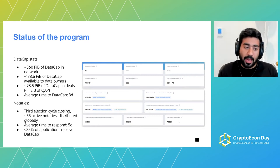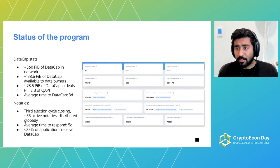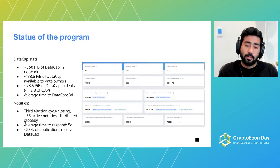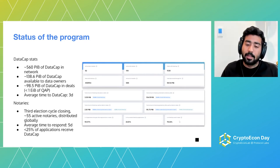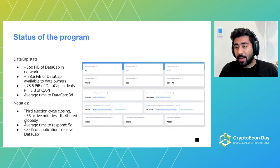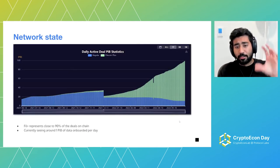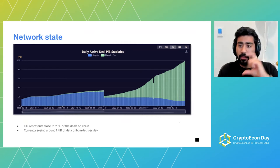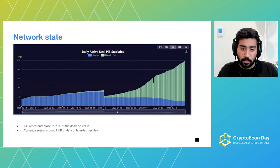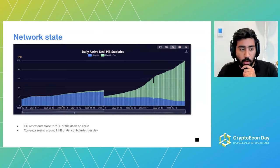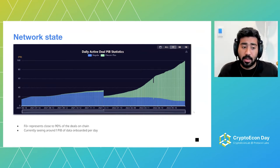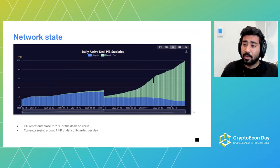In terms of our program, we're wrapping up our third round of notary elections and will have between 55 and 60 active notaries distributed globally. We're working on mechanisms to increase their activity and enablement and reduce how long it takes them to work with clients to get DataCap. Right now, about 23% of applications for DataCap actually end up receiving it. Looking at network state, Filecoin Plus now represents 90% of all deals — it's a very important entry point for legitimate deal making on the network — and we're currently seeing throughput rates of about one petabyte per day.